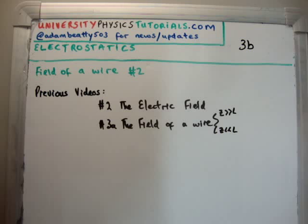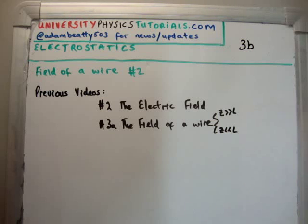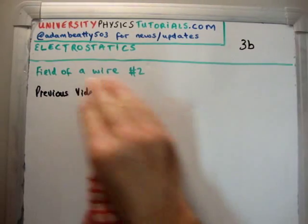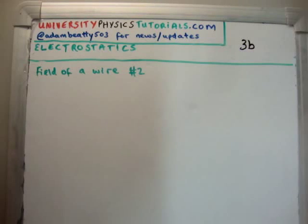The previous video to this is the most general video on a wire where I had linear symmetry and it made the problem a lot easier. Thereafter I was able to look at the two limits when the distance from the detector versus the length of a wire was large versus when it was small. I also discussed the electric field in video number 2. This is going to be similar to video number 3A but I'm going to have no symmetry.